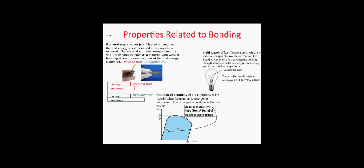Now that we know about the different types of bonding, we can talk about the three properties directly related to a material's type of bonding: thermal expansion, melting point, and modulus of elasticity. Thermal expansion is the change in length as thermal energy is either added or released to a material. A material with stronger bonding will not expand as much as a material with weaker bonding when the same amount of thermal energy is applied.